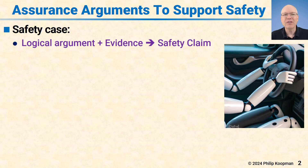As an overview of the talk, assurance arguments are needed to support safety for autonomous and highly automated vehicles. A safety case is a logical argument plus some evidence that supports a safety claim.